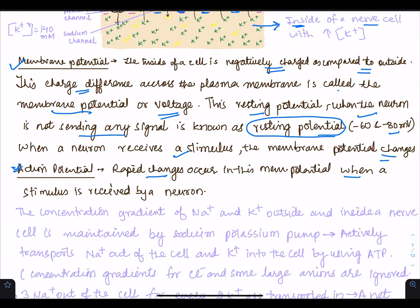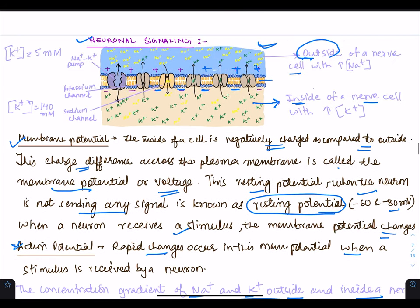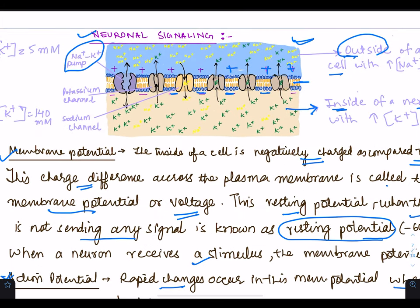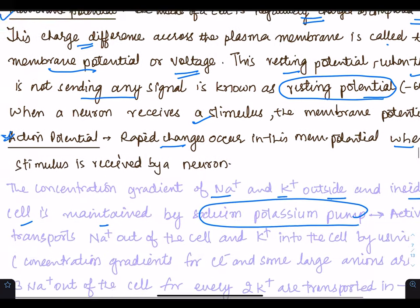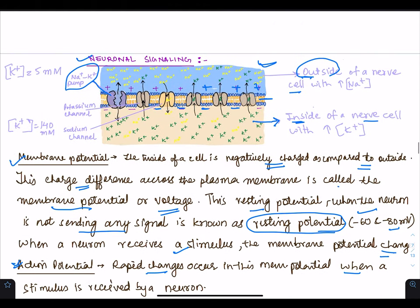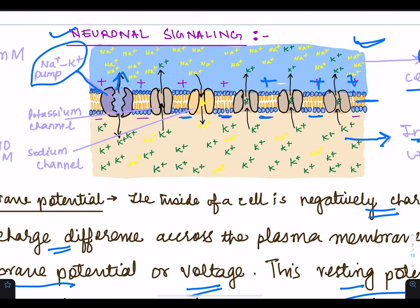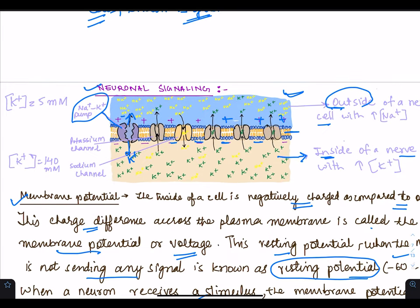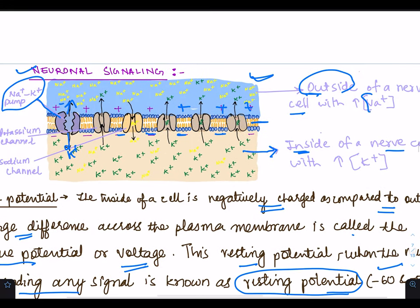The concentration gradient of sodium and potassium outside and inside a nerve cell is maintained by the sodium-potassium pump. This pump actively transports sodium out of the cell and potassium into the cell by using ATP. It is pumping sodium out of the cell and potassium into the cell. The diagram clearly shows that the concentration of sodium is very high on the outside of the neuron, while the concentration of potassium is very high on the inside.